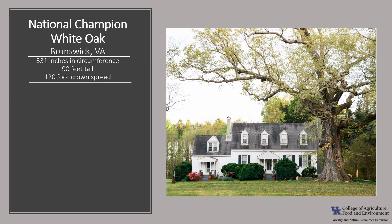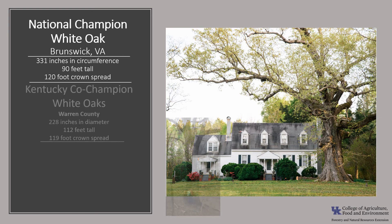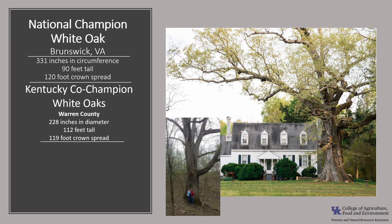The national champion white oak is in Brunswick, Virginia. It's 331 inches in circumference, 90 feet tall, with a 120-foot crown spread—that would be a nice tree to have in your front yard. In Kentucky, we have co-champion white oaks. One is in Warren County: 228 inches in circumference, 112 feet tall, with a 119-foot crown spread. The other co-champion is in Greene County: 256 inches in circumference, 82 feet tall, and a 117-foot crown spread.